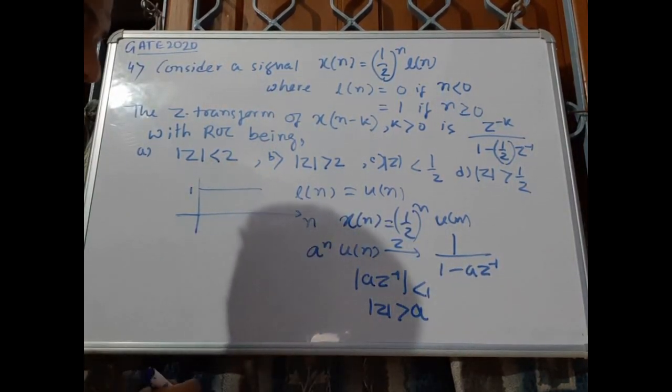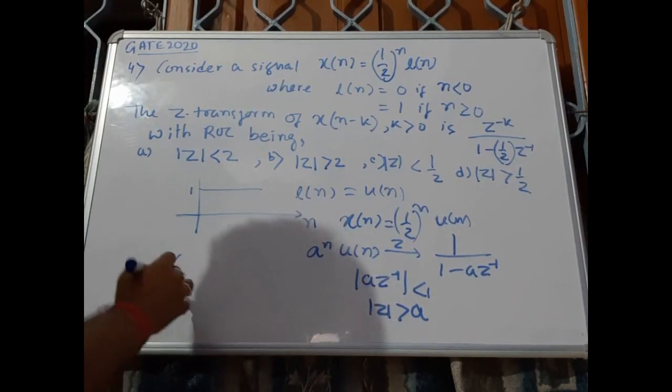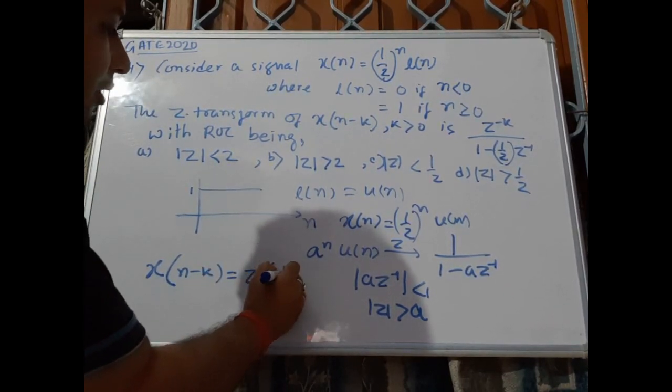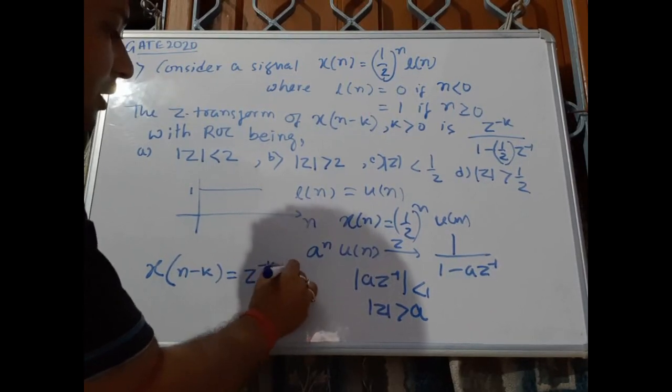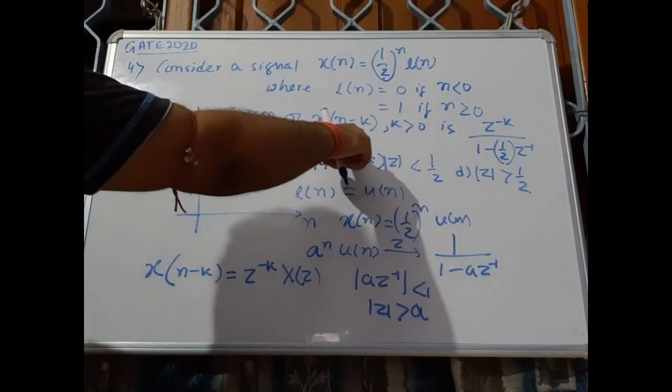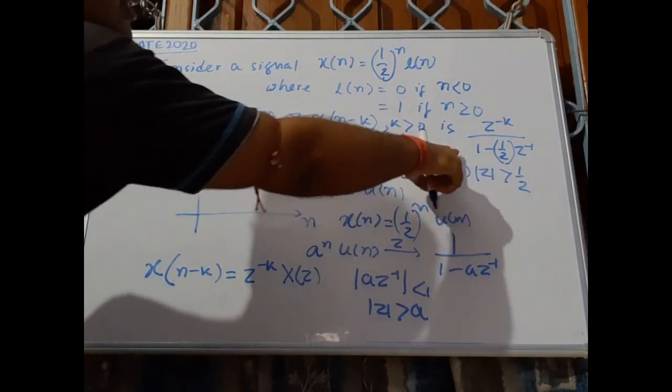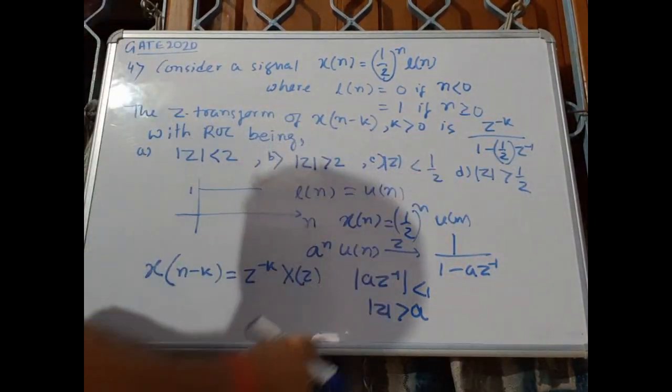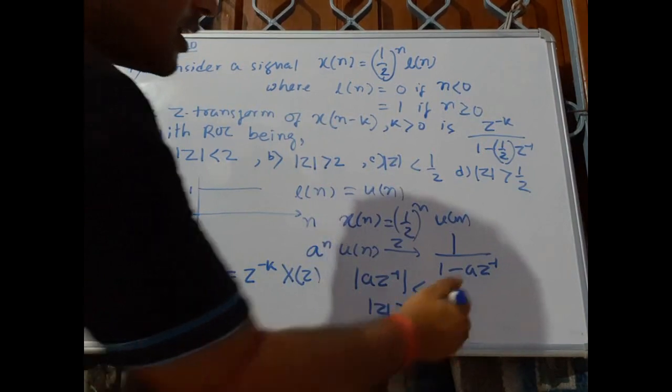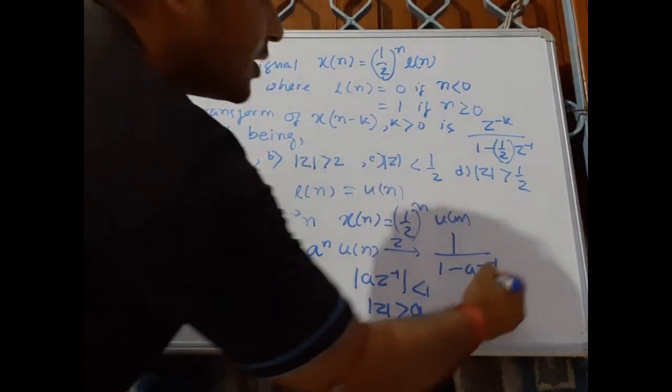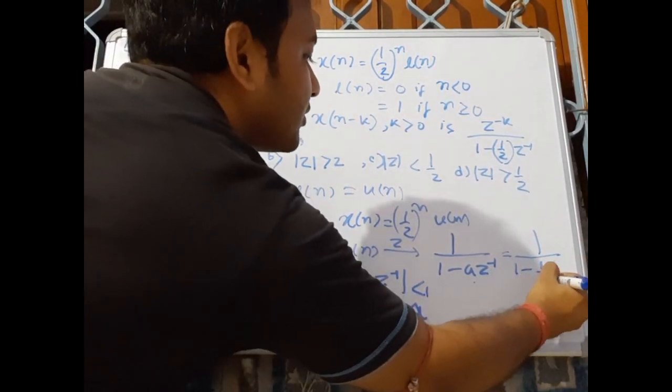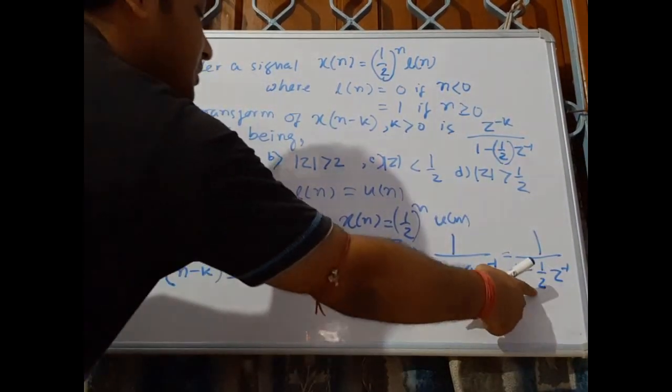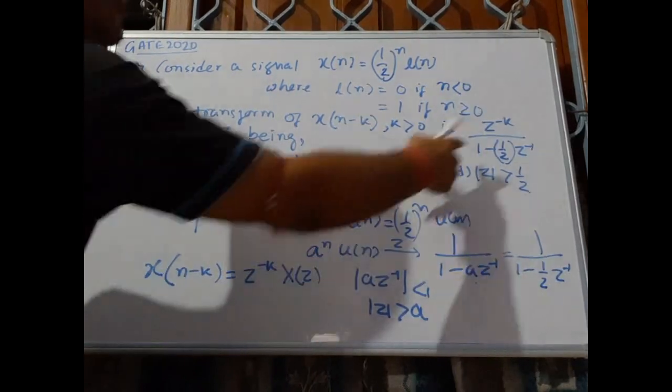If we have x(n-k), what is the solution? This will be z to the power minus k times X(z). It is given that for x(n-k), the Z-transform will be z to the power minus k times whatever the Z-transform solution is. Here a to the power n means a is half, so this will be 1 minus half times z inverse. This is X(z), and if we put this, we will get the result.